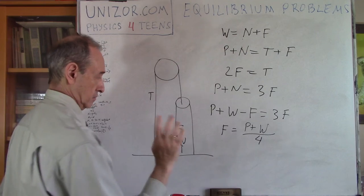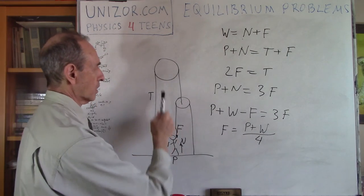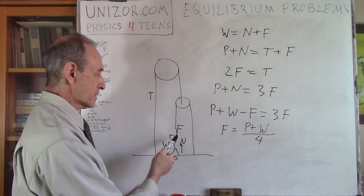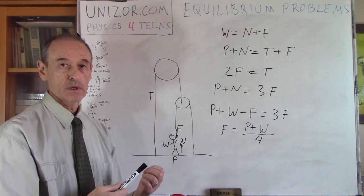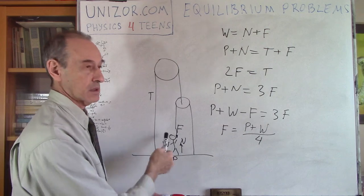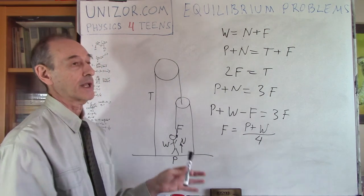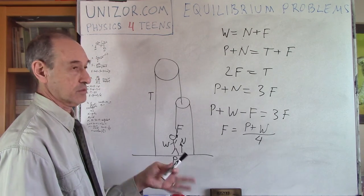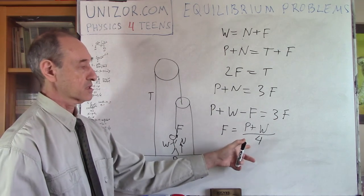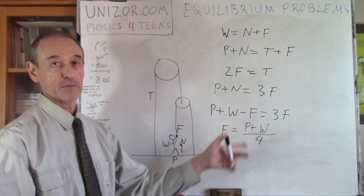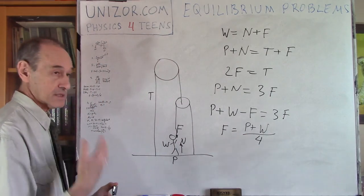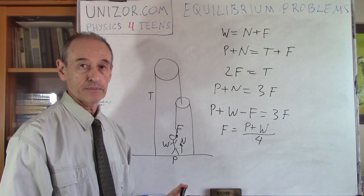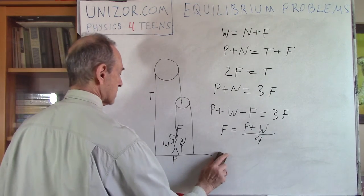By the way, notice — divided by 4. Using two pulleys allows us to pull with a significantly smaller effort than the total weight P plus W. If the platform were weightless, the person would only need to exert one quarter of his own weight, W divided by 4. This is exactly how pulley systems are used in practice — they make lifting much easier.